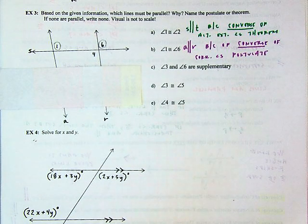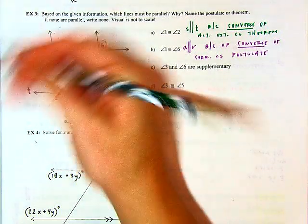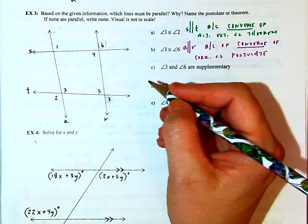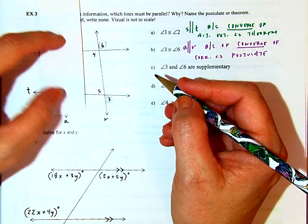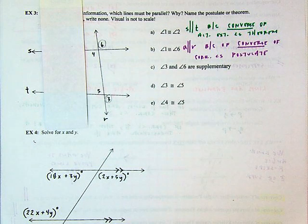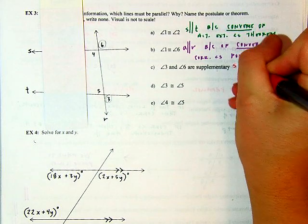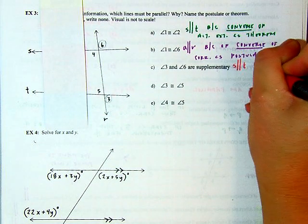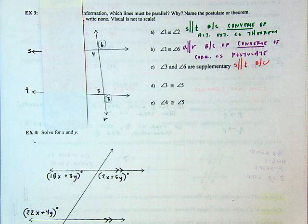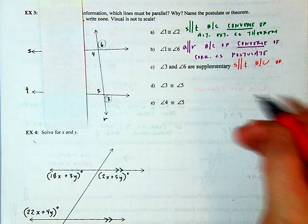Three and six are supplementary. Let me focus on three and block the unconnected line out of view. Three and six — what kind of angles are they? They're same side exterior. Is that the right relationship? Yes. So we can say that S and T are parallel. Why? Because of the converse of the same side exterior angles theorem.